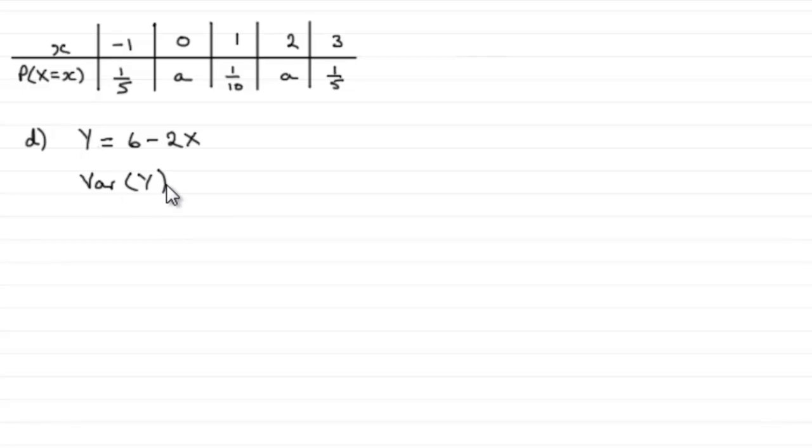Now to do something like this, what we've got to remember is this particular result, that if you have the variance of a constant, let's call it a, plus or minus another constant, say b, times another random variable, we'll just call it X, then this is exactly the same as b squared times the variance of your random variable X.